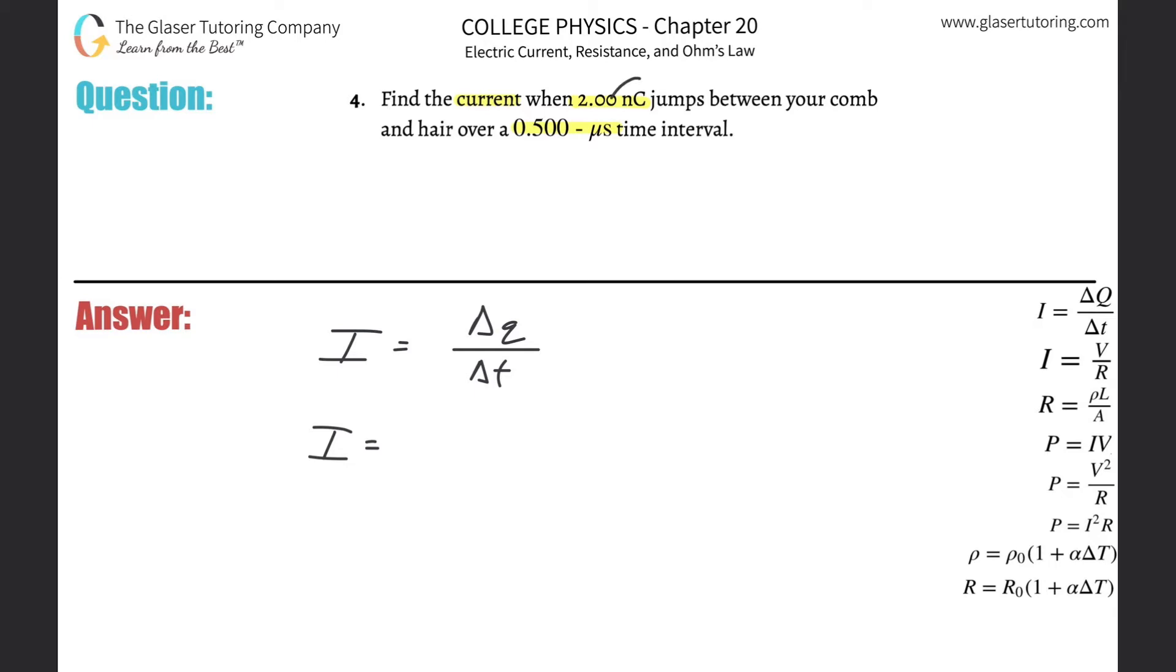So simply remember if you have to convert from nano to the base unit of coulomb without the nano in front, all you have to do is take the value and multiply it by 10 to the minus ninth. That's now in coulombs. Easy.